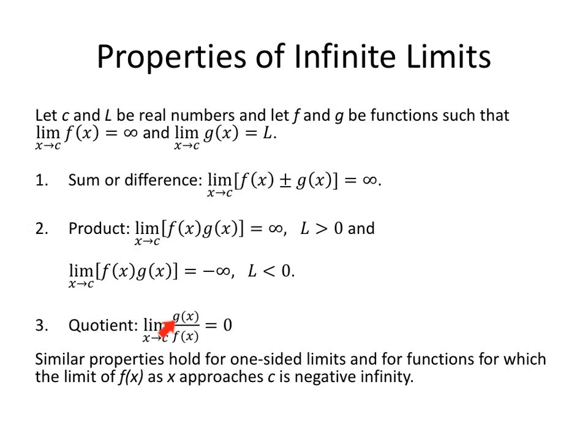Quotients. Any real number L divided by a value going to infinity is zero. If you have seven M&Ms, an entire campus shows up and wants a piece of those seven M&Ms, essentially everybody gets nothing. Similar properties hold for one-sided limits, and for functions at which the limit of f(x) as x approaches c is negative infinity. So I only defined them for positive infinity, but similar definitions can be made when x approaches c of f(x) equals negative infinity.